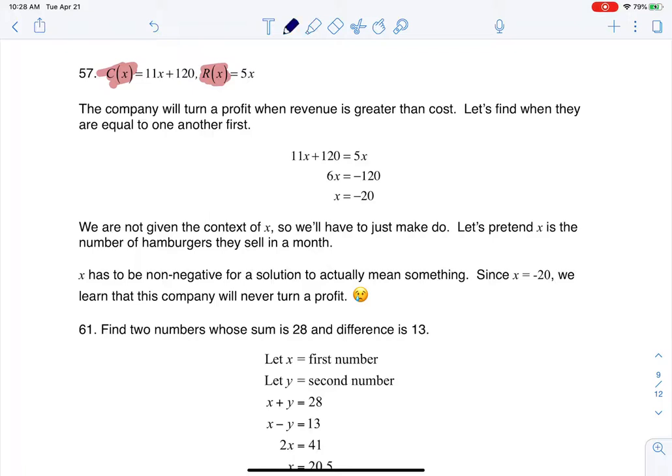We were given one about cost and one about revenue, and then we were asked about profit. The way to turn a profit in any business, or at least this fast food one, is when your revenue is greater than your cost. That's what you want, right? We want our revenue, the money we take in to be more than the cost, the money we have to put out.